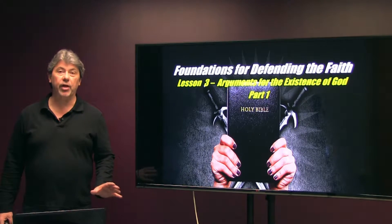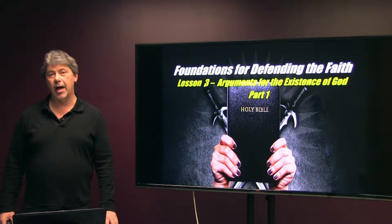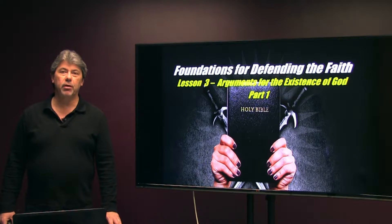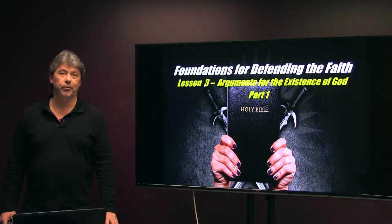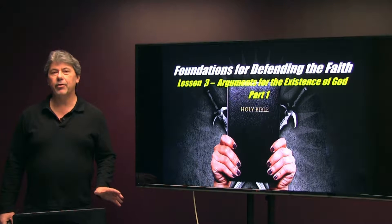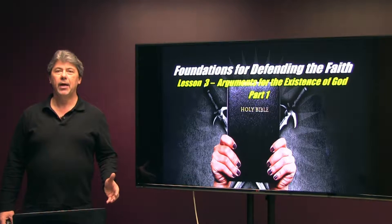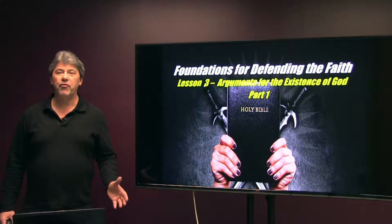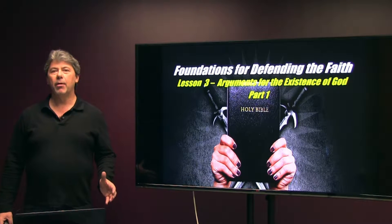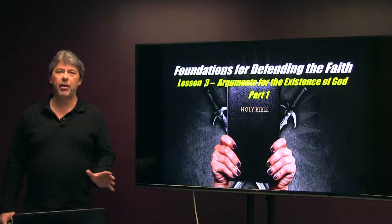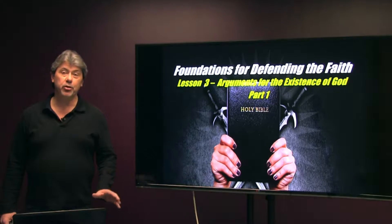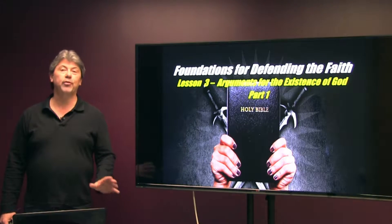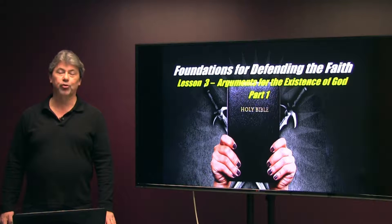We're going to primarily teach on the first argument for the existence of God. But before we do, let's give you a brief review of last time's lesson, which we talked about relative versus absolute truth. We dealt with the idea that there has to be an objective, transcendent kind of truth that is not based upon our preference or opinions, but an absolute truth that's true for all people at all times and in every place. We did a pretty good job establishing that truth can be known — real truth, absolute truth, objective truth.